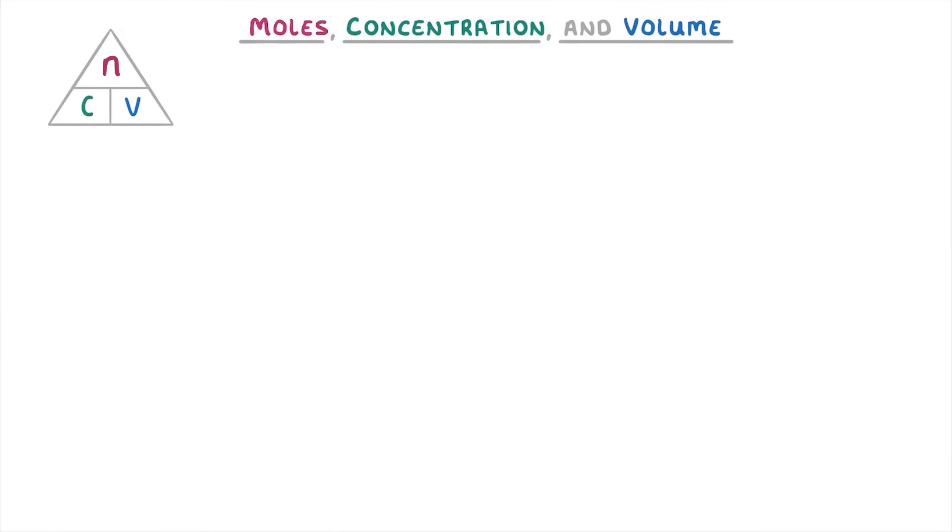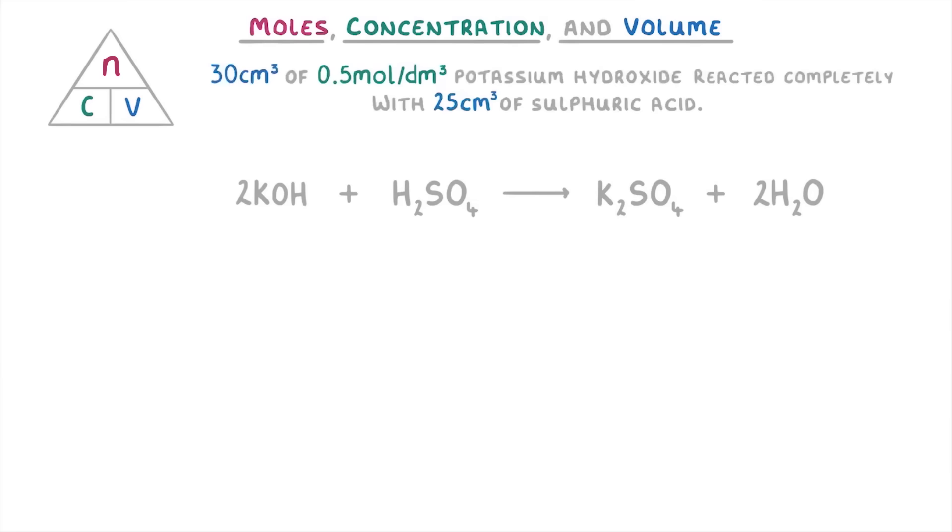Now, a more complicated scenario is when we're given an equation, like this one here, and we're asked to find an unknown concentration or volume. For example, if we knew that 30 centimetres cubed of 0.5 mole per decimetre cubed potassium hydroxide reacted completely with 25 centimetres cubed of sulfuric acid, we should be able to work out the concentration of the sulfuric acid.